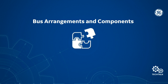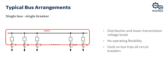Bus arrangements and components: One of the simpler bus arrangements is the single bus or single breaker arrangement, found mostly at distribution and lower voltage levels. It offers no flexibility in terms of operation — if you need to take a bus outage, you must take all breakers associated with that bus out of service, removing all sources and loads. Similarly, if there is a fault on the bus, all breakers must be tripped.